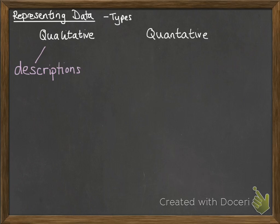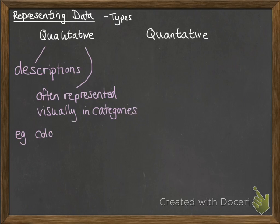So first of all we can have qualitative or quantitative. Now qualitative is talking about descriptions and it's often represented visually in categories. For example, you could think about colours of cars sold or types of computer games played. Those things would be categorised. They wouldn't have numerical values.